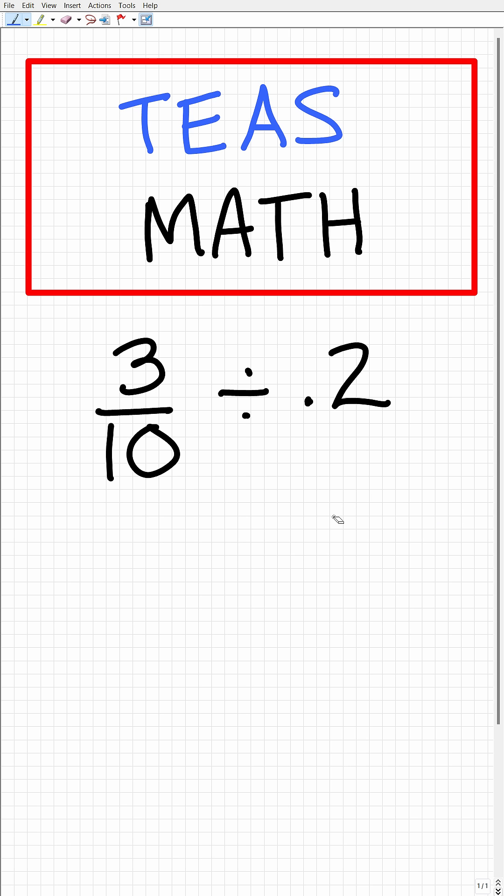Now there's two things we can do here. We can either convert this fraction into a decimal because we have a decimal over here, or we can change this decimal into a fraction. And I think it's going to be a lot easier for us to convert 0.2 into a fraction.